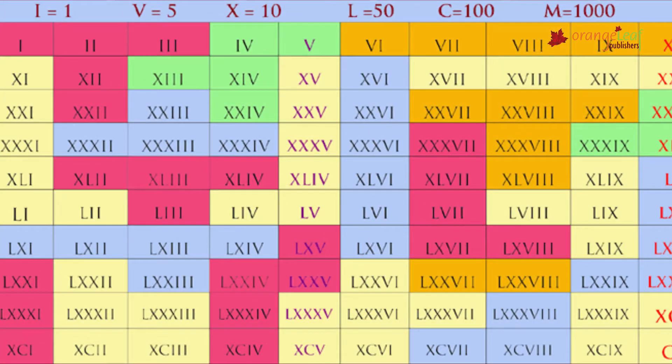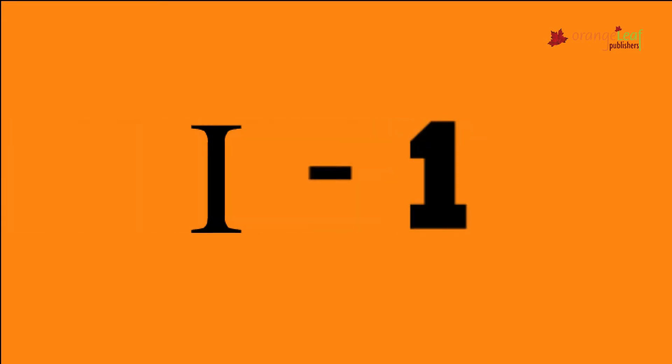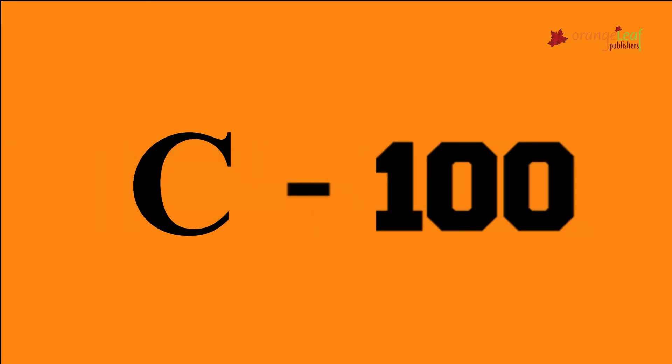These are the basic symbols that Romans use to denote numbers: I is used for 1, V is used for 5, X is used for 10, L is used for 50, C is used for 100, D is used for 500, and M is used for 1,000.